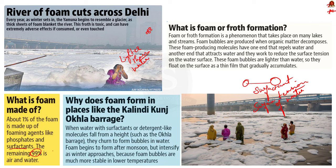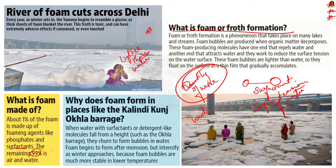You might wonder why foam formation occurs around this time of year. The reason is the quantity of water in the river — currently in a lean phase with less flow, so pollutants remain undiluted. Secondly, foam occurs mainly near Kalindi Kunj and Okhla Barrage because when water containing surfactants or detergent-like molecules falls from a height, it churns to form bubbles. This is the main reason foaming occurs mainly during this period.